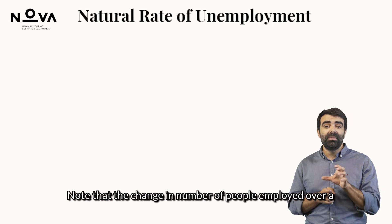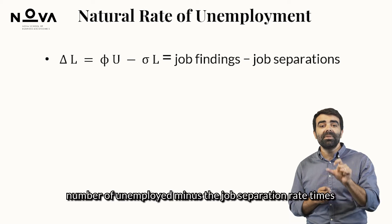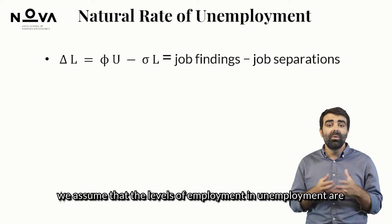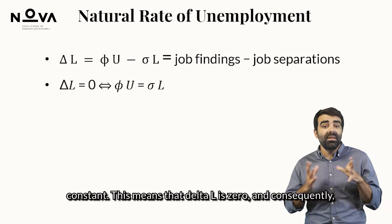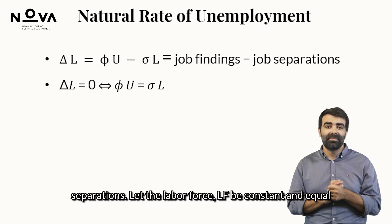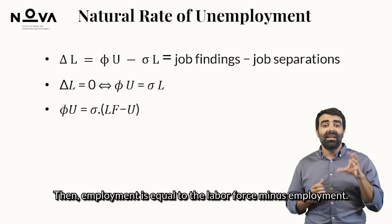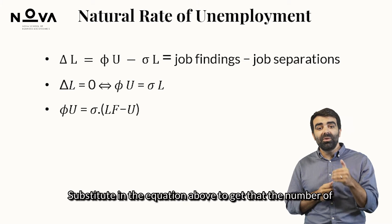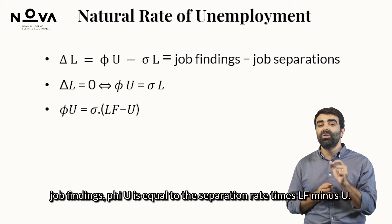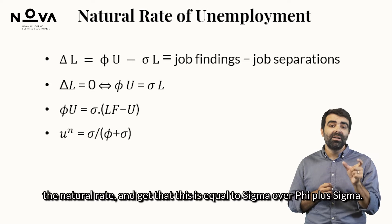The change in number of people employed over a month, delta L, is given by the job-finding rate times the number of unemployed minus the job separation rate times the number of employed people — the difference between job-findings and job separations. In the long run, we assume that employment and unemployment levels are constant, so delta L is zero, meaning job findings must equal job separations. Let the labor force LF be constant and equal to L plus U. Substituting, we get that phi times U equals sigma times (LF minus U). Solving for unemployment over the labor force gives the natural rate equal to sigma over (phi plus sigma).